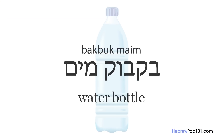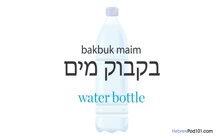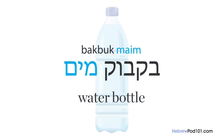Let's look at a simple example: the compound 'water bottle.' A water bottle is a bottle of water. In English, the main noun is the second word — the bottle. In Hebrew, it's the reverse: the first word is the main noun and the second is the description. So water bottle in Hebrew is 'bakbuk maim' — 'bakbuk' meaning bottle, and 'maim' meaning water.